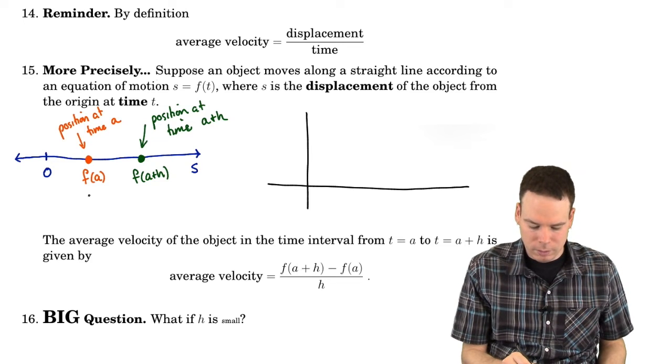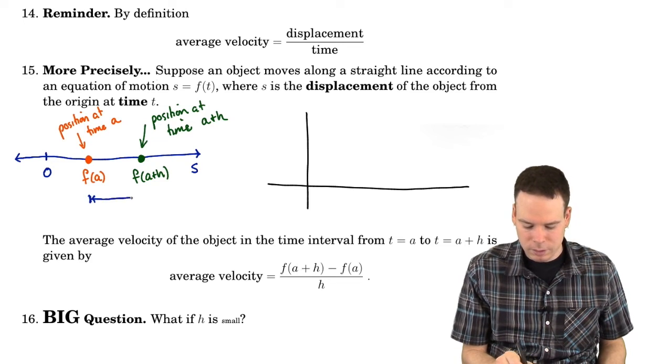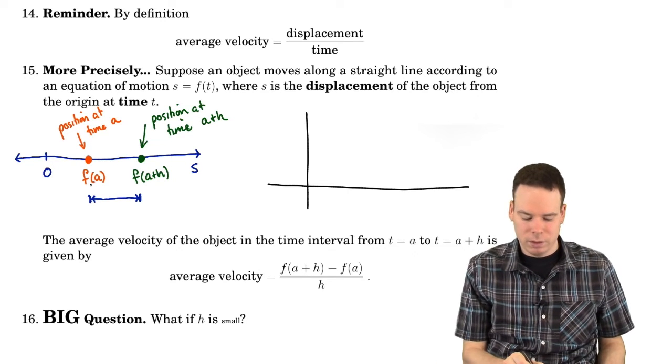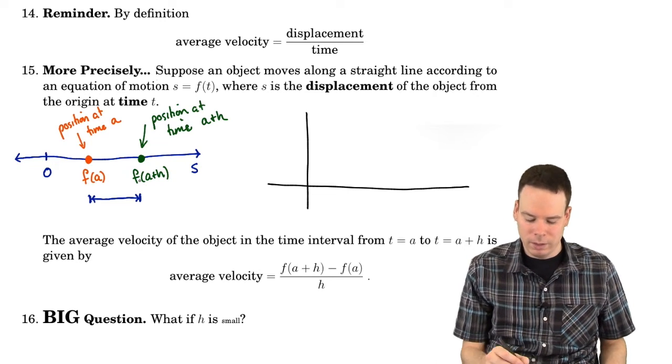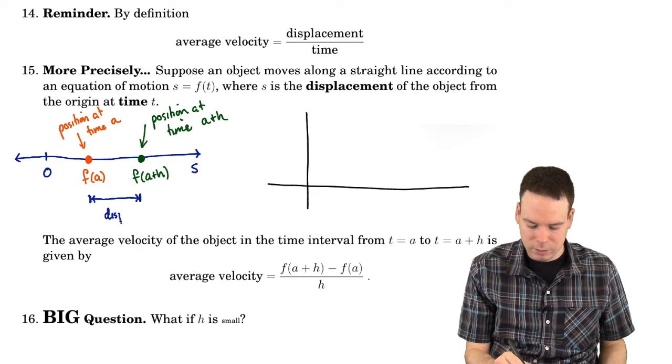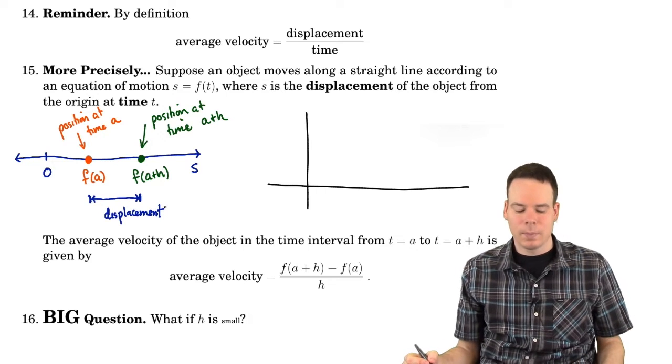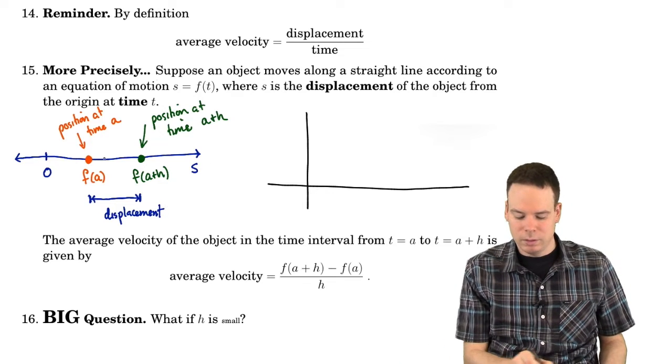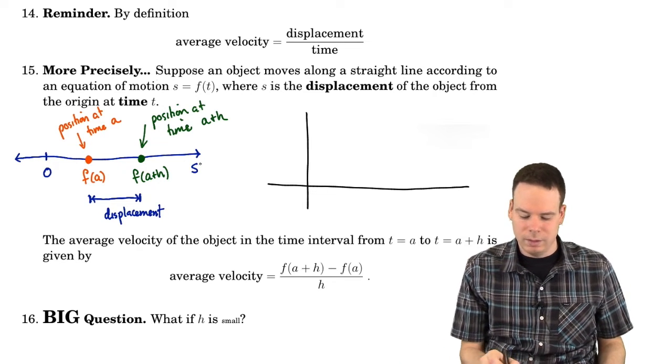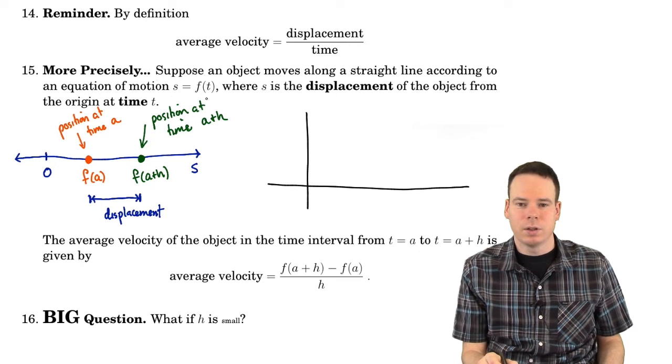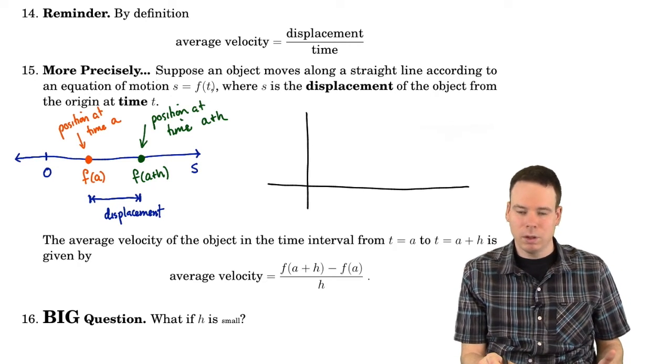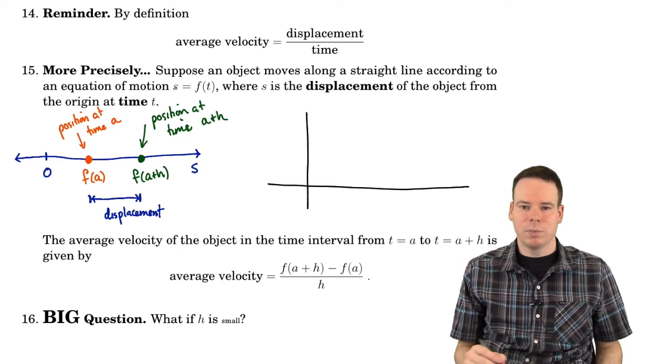And we can do things like, okay, now I can figure out its displacement. What's the difference between where it started at time a and where it ended at a plus h? That's the displacement. And we have this particle that's moving around on the s-axis. Its position is always given by the function f. So whatever time you want to figure out where it is, you plug it into the function f and it gives you the position.